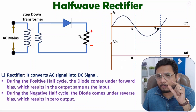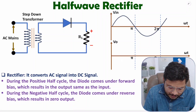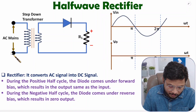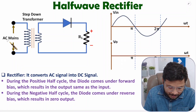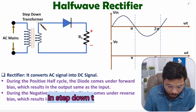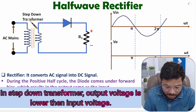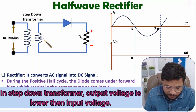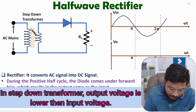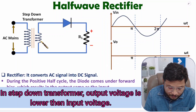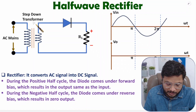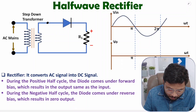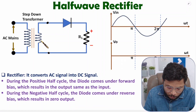Let us begin with the circuit of the half wave rectifier. In the basic circuit, we give AC mains as input, which is connected to a transformer. I have used a step-down transformer here. A step-down transformer takes AC input and gives AC output, but with a lower voltage. You can observe more windings on the primary side and fewer on the secondary side, which confirms it is a step-down transformer.